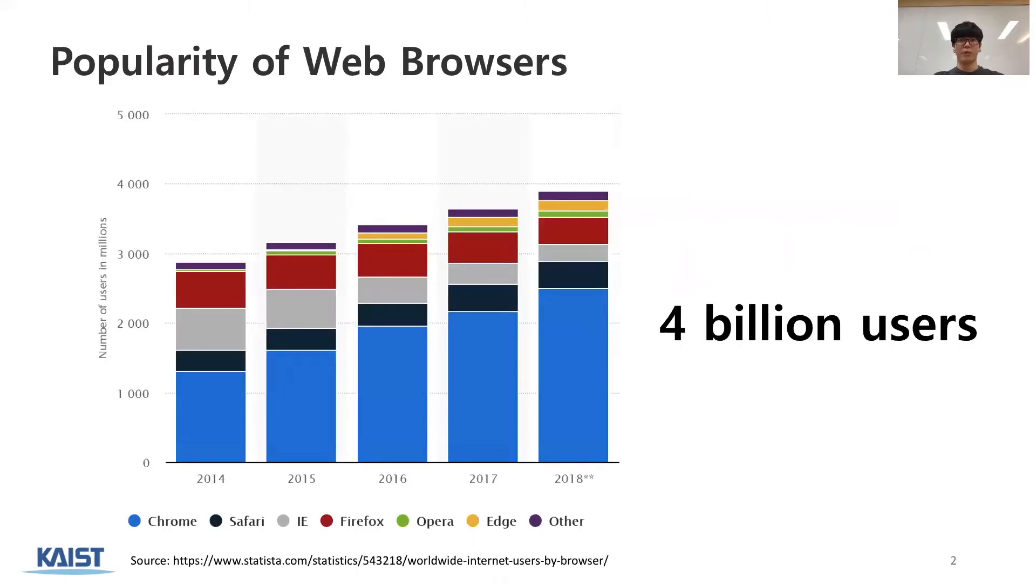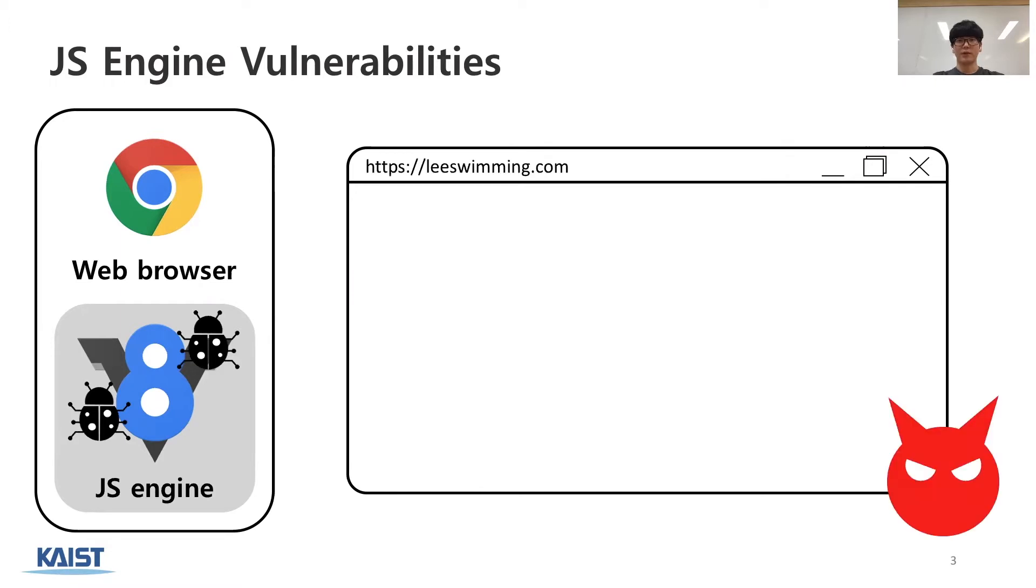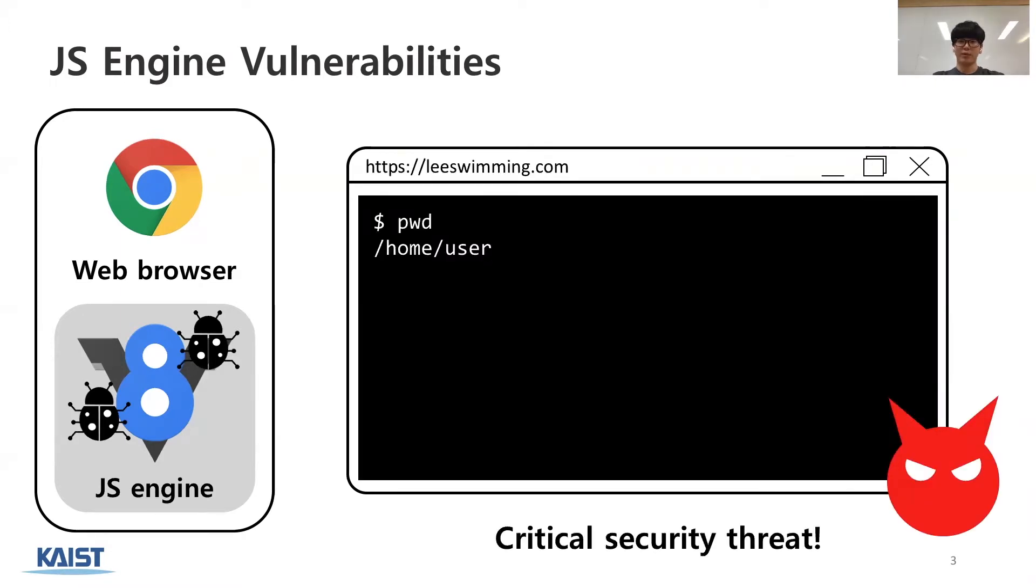Web browsers are becoming more and more popular. In 2018, almost 4 billion people in the world used web browsers every day. In a web browser such as Chrome, there is a component called a JS engine which executes JavaScript code of a web page. Let's assume there is a vulnerability in this engine. Once a benign user accesses a malicious web page, the adversary will be able to execute arbitrary code on behalf of the user by exploiting the vulnerability.